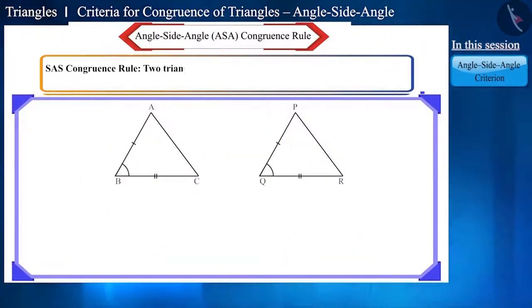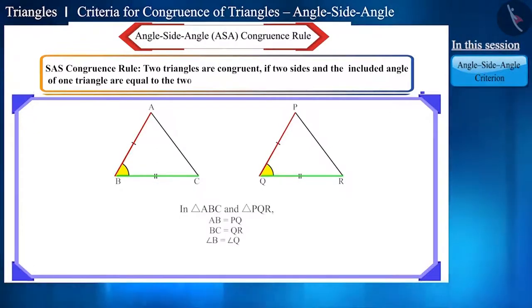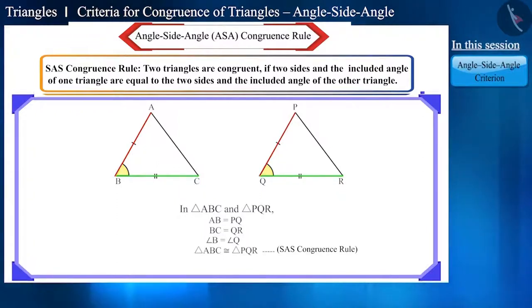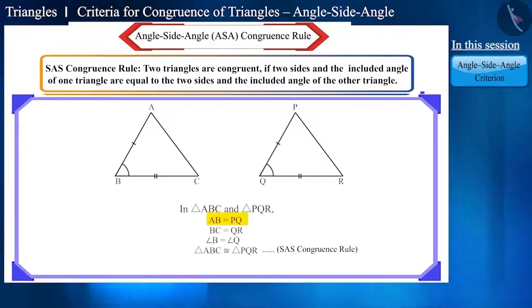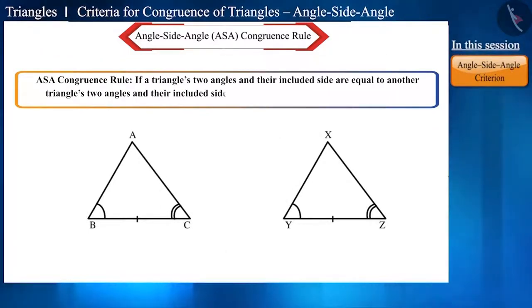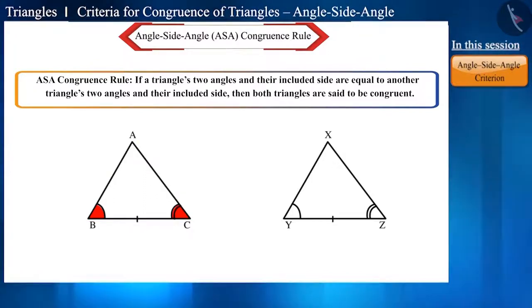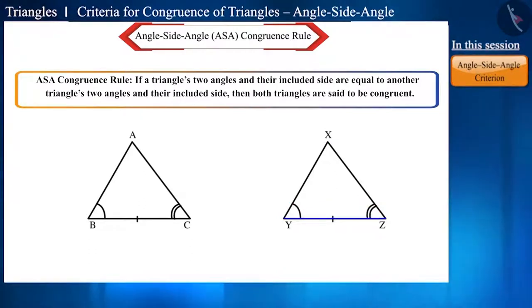In the SAS congruence rule, we have seen that when two sides and the included angle are equal in two triangles, then the triangles are congruent. The name of this rule itself indicates that the angle that is equal is made by these two sides. According to the ASA, i.e. angle side angle congruence rule, if a triangle's two angles and their included side are equal to another triangle's two angles and their included side, then both triangles are said to be congruent.